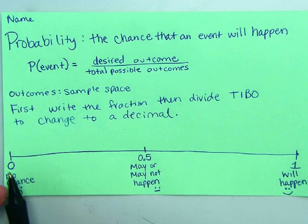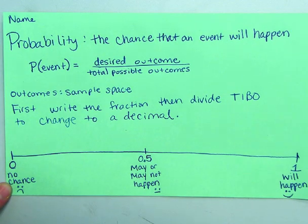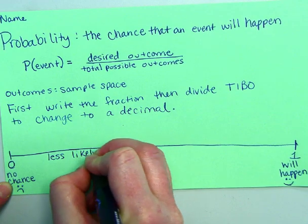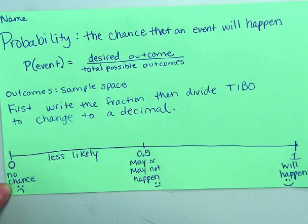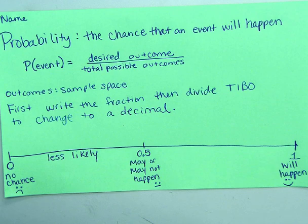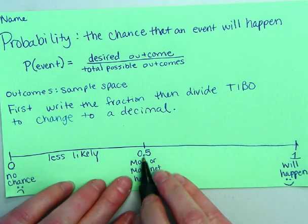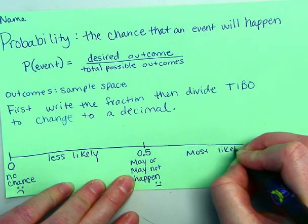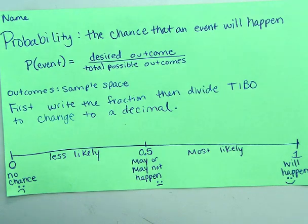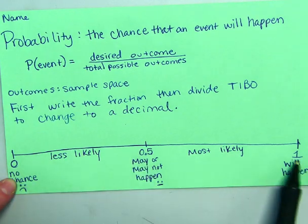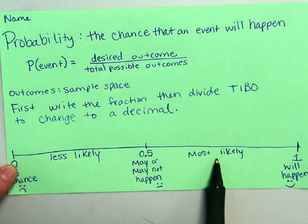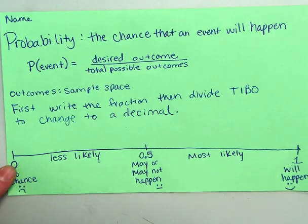So in between 0 and 0.5 is not very likely, so it's less likely. So likely means it will or will not happen. So less likely. It's not as likely to happen. But between 0.5 and 1, it is most likely. So once you find the probability, then you can put it on this number line between 0 and 1 and say, okay, is it less likely or most likely? That's how we're looking at probability.